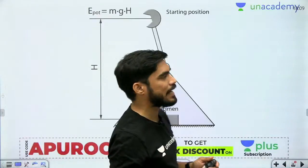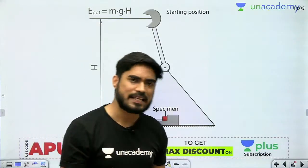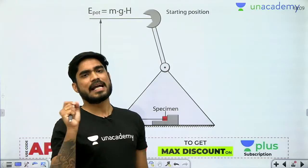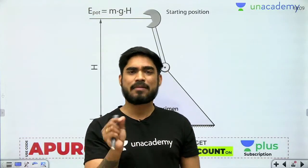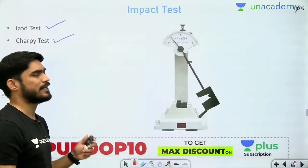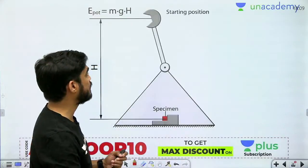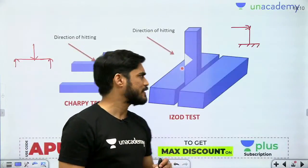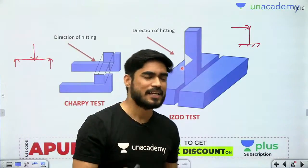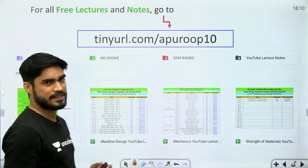You don't need to go into too much detail because in the GATE exam so far no numerical question has come on these tests. If a question does come, it will be a one-mark conceptual question about what impact testing is, how it is done, and what is the difference between Izod and Charpy test. Questions on formulas or hardness values of different materials are not expected.